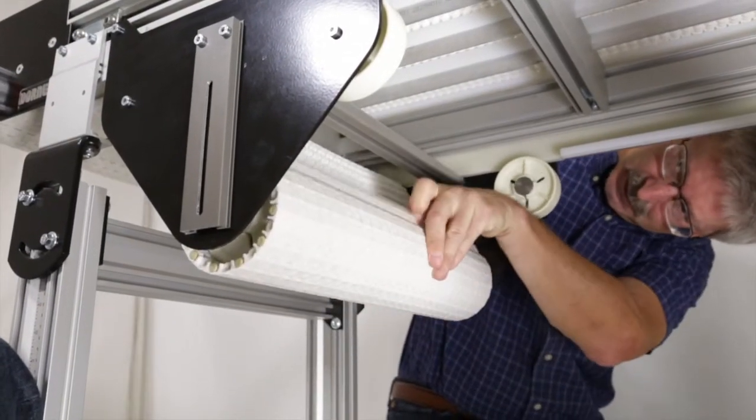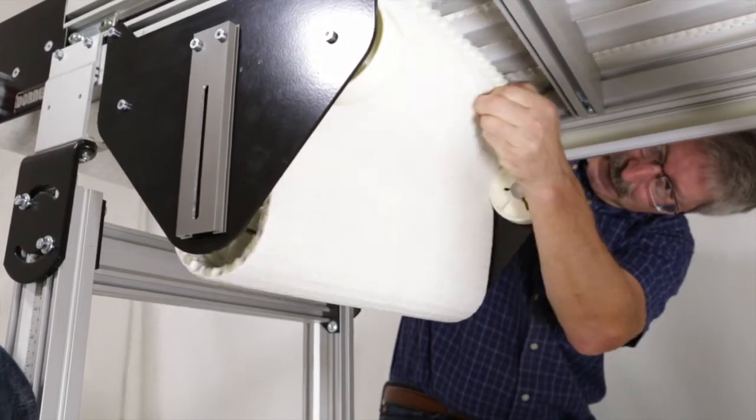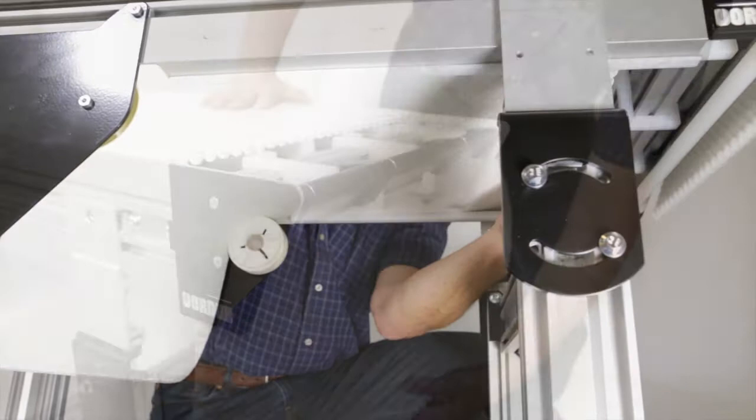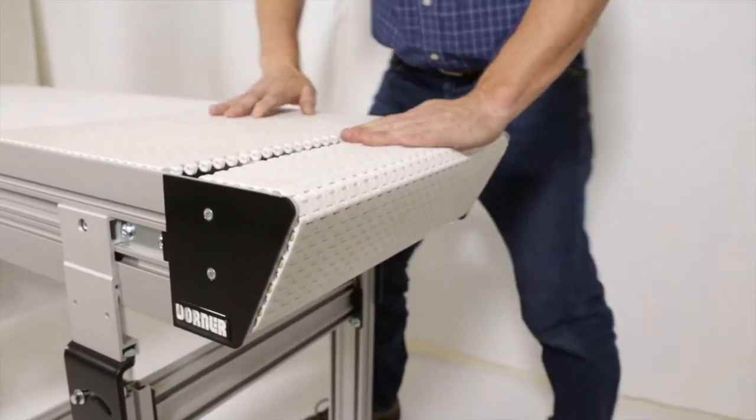Wrap the belt around the bottom of the weighted take-up shaft and continue wrapping the belt over the top of the pucks and on top of the wear strips. Wrap the belt around the idler tail.